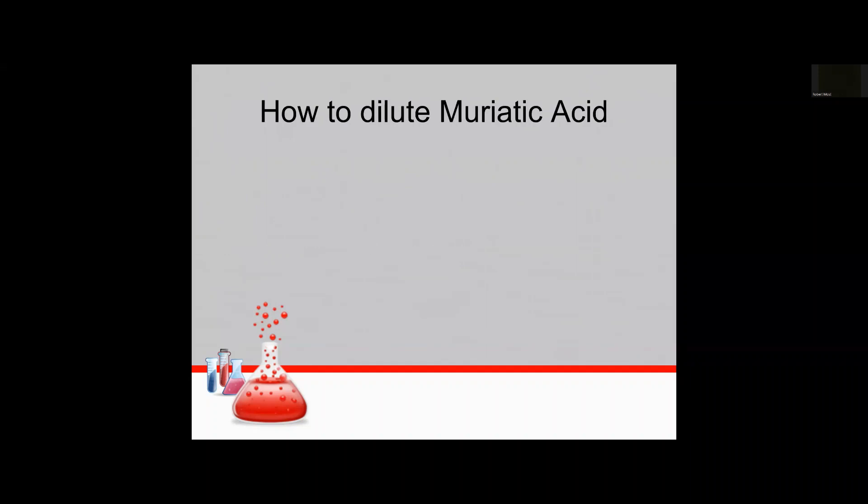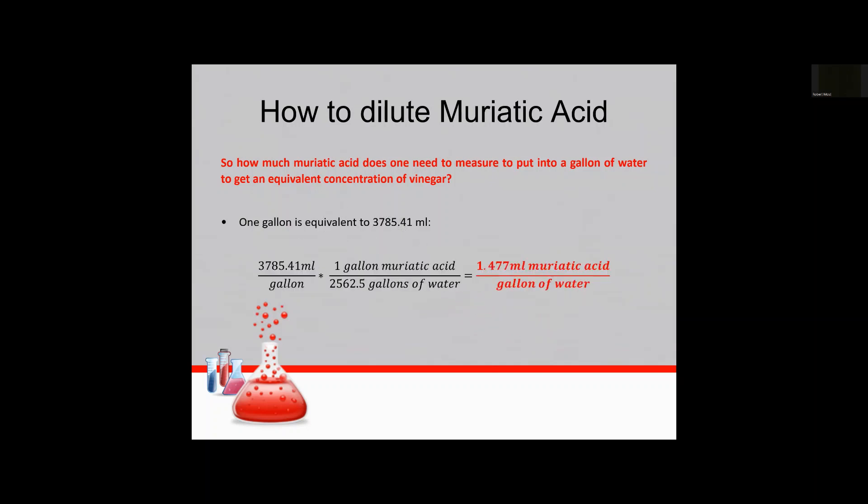So how do we dilute muriatic acid if we had one gallon of water and we wanted to get the equivalent hydrogen ion concentration of vinegar? Yeah so that's my question right there. And so one gallon is about 3,785 milliliters so if we just do a quick calculation that ratio one gallon of muriatic acid to 2,562 and a half gallons of water gives us about 1.5 approximately just under 1.5 milliliters of muriatic acid needed to put into one gallon of water. So that's a tiny amount of muriatic acid.